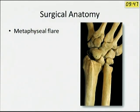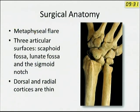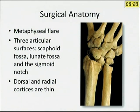For Distal Radial Fractures, you have to know something about the surgical anatomy. The lower end of radius has a metaphysial flare. It has three concave articular facets: the scaphoid facet, lunate facet, and the sigmoid facet. The dorsal and lateral cortices are usually thin, which is why these fractures typically displace to the lateral and dorsal side.